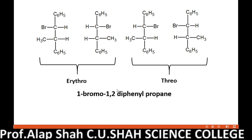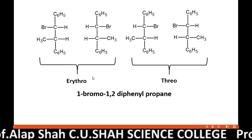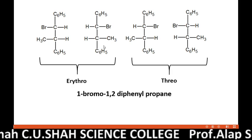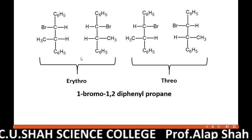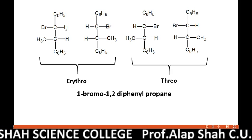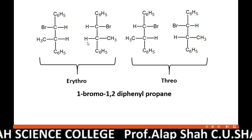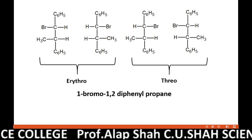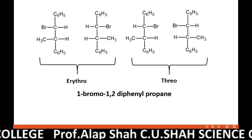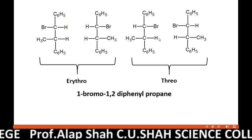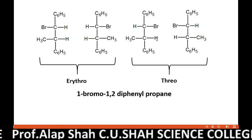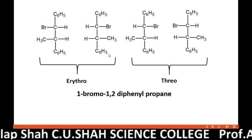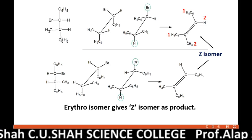For the reactant 1-bromo 1,2-diphenyl propane, 4 isomers are possible because of the presence of 2 asymmetric carbons. There are 2 erythro isomers where both hydrogens lie at the same side, and 2 threo isomers where the 2 protons are on opposite sides. These are the 4 isomers of the reactant. Now let us check the reaction of the first 2 erythro isomers using Fischer projection.